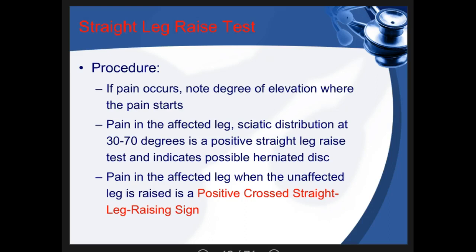You can also perform the straight leg raise on the opposite leg. If raising the unaffected leg causes pain in the affected leg, this is called a positive cross straight leg raise sign, indicating a more significant nerve root compression — similar in concept to Rovsing's sign in the abdominal examination.